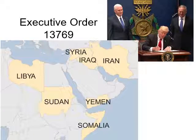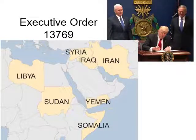Executive Order 13769 lowered the number of refugees admitted to the U.S. in 2017 to 50,000, suspended the U.S. refugee admissions program for 120 days, suspended the entry of Syrian refugees indefinitely, and directed some cabinet secretaries to suspend entry of those whose countries did not meet adjudication standards under U.S. immigration law for 90 days. The Department of Homeland Security listed those countries as Iran, Iraq, Libya, Somalia, Sudan, Syria, and Yemen.